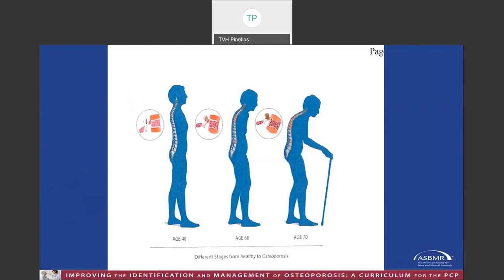This cartoon shows the progression of loss of height and collapse of vertebrae in severe osteoporosis. You can see age 40, age 60, and age 70. This is the progression that we are trying to prevent with our therapies.